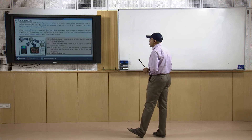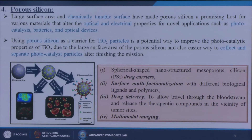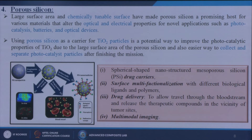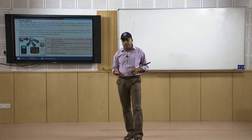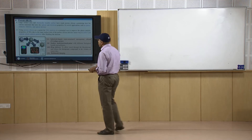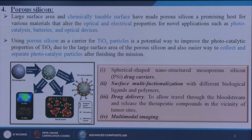Next we apply porous silicon for different applications. Large surface area and chemically tunable surfaces have made porous silicon a promising host for various materials that alter optical and electrical properties for novel applications such as photocatalysis, batteries, and optical devices. Using porous silicon as a carrier for TiO2 nanoparticles is a potential way to improve the photocatalytic properties of TiO2 due to the large surface area of porous silicon, and it provides an easier way to collect and separate photocatalyst particles after use.